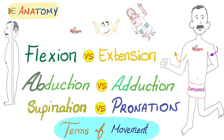Because anatomy is not just a science, it's a language. You have to understand the terms: flexion versus extension, abduction versus adduction, supination versus pronation. We shall also talk about internal rotation versus external rotation, and since you're watching Medicosis, there will be some clinical implications. Now let's get started.